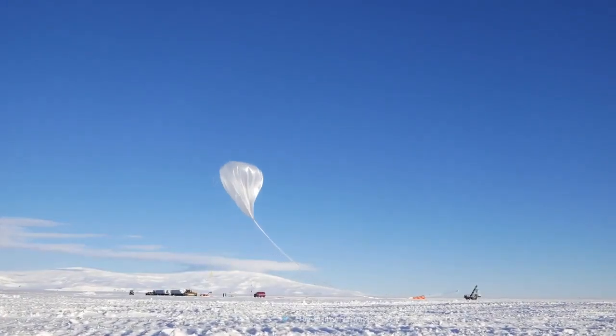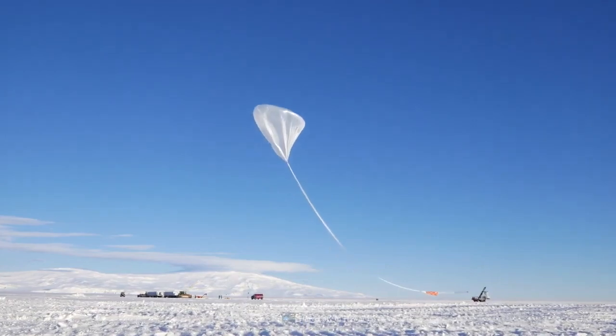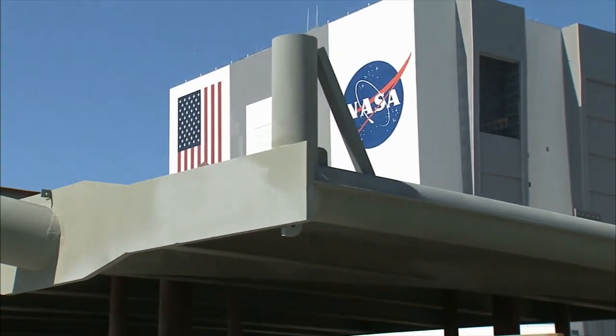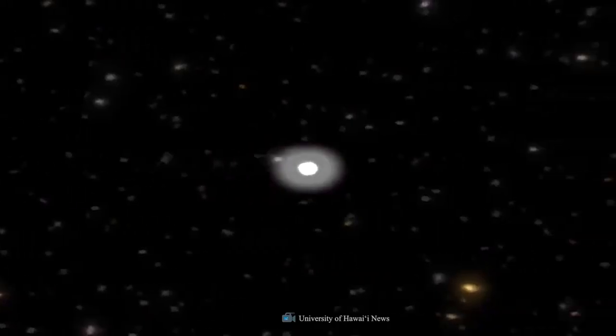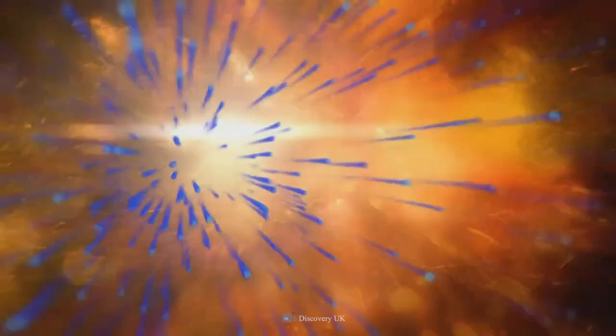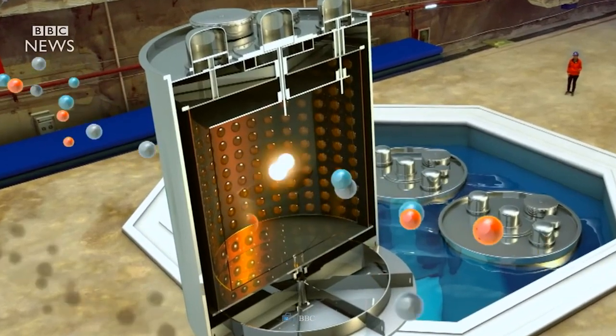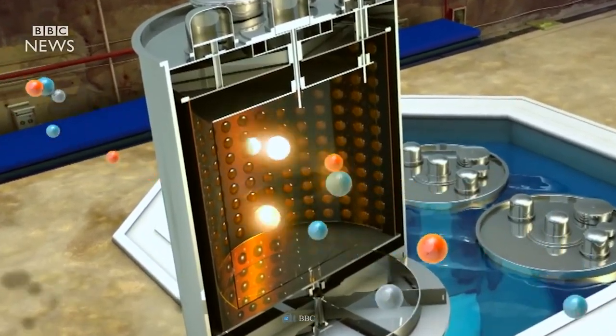We have said before that the ANITA experiment, which is a high-altitude helium balloon with a bunch of radio antennas and is partly funded by NASA, has found a few instances of what seem to be highly energetic neutrinos coming through Earth. Here's why that's super weird. Neutrinos are those ghostly fundamental particles that flow through everything, barely interacting with normal matter, which makes them exceedingly hard to detect.